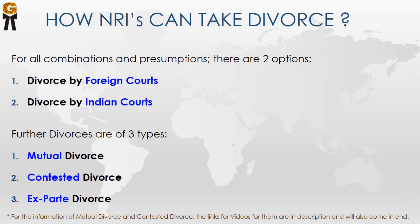For all combinations and circumstances, there are two options: divorce by foreign courts or divorce by Indian courts. Further, divorces are of three types: mutual divorce, contested divorce, or expert aid divorce.